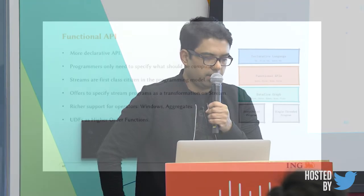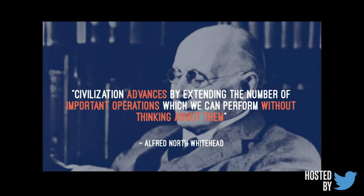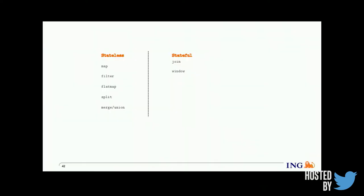The next level of abstraction is the functional API, which gives more declarative abstraction where you deal with streams as a first-class citizen. It offers higher-order functions so you can define operations using map, flat map, and filter combinators, which are well-known from functional programming. Users only need to deal with the 'what' part — the 'how' is handled by the stream processor. Typical stateless operators include map, filter, flat map, split, merge, and union, while stateful operators such as join and window are also supported.